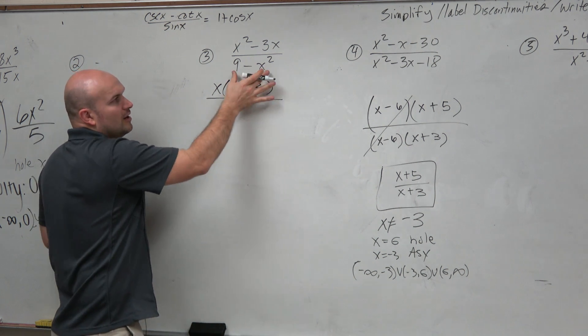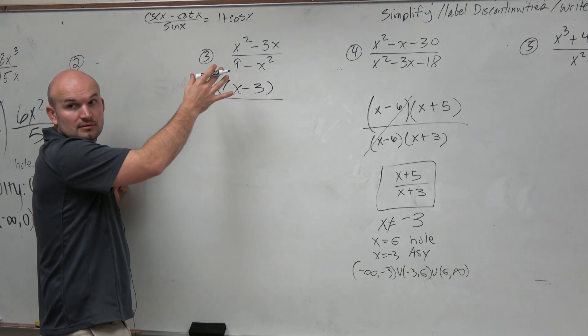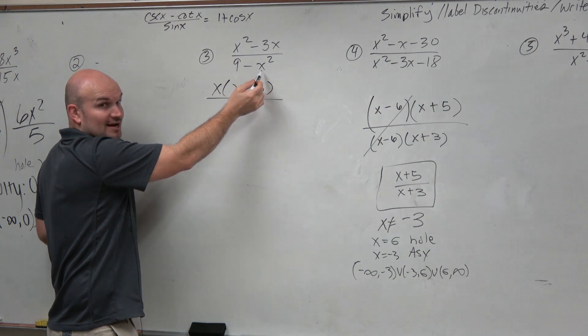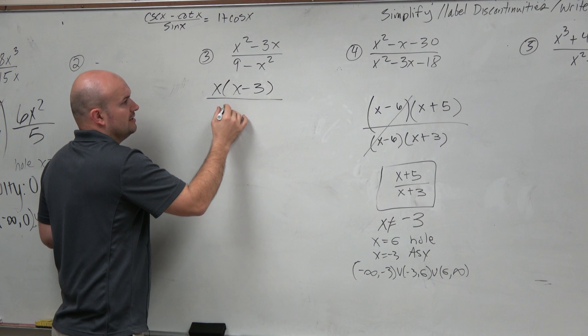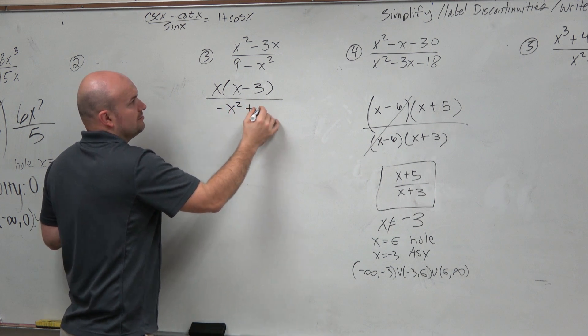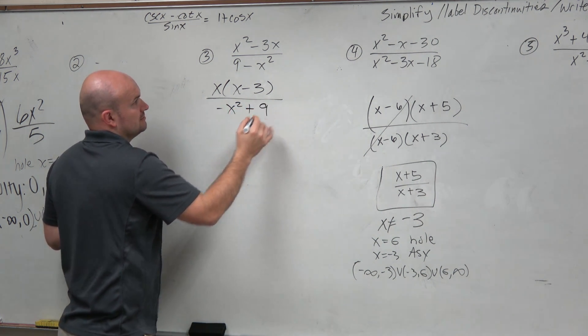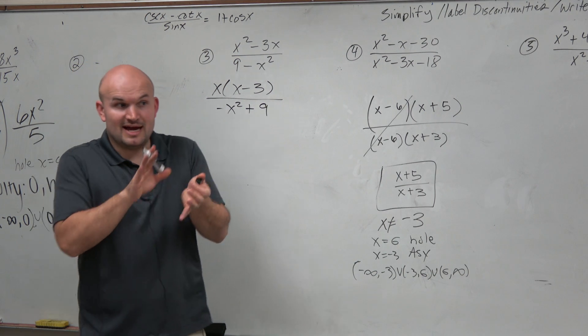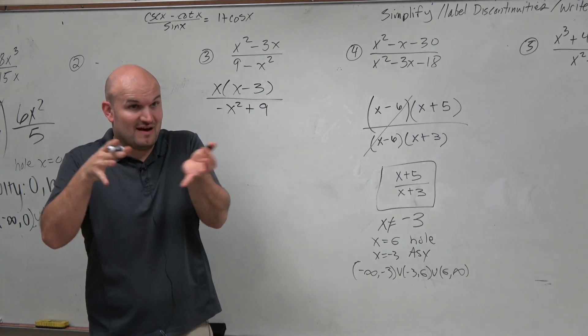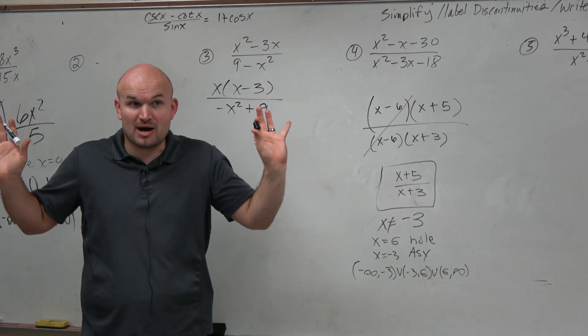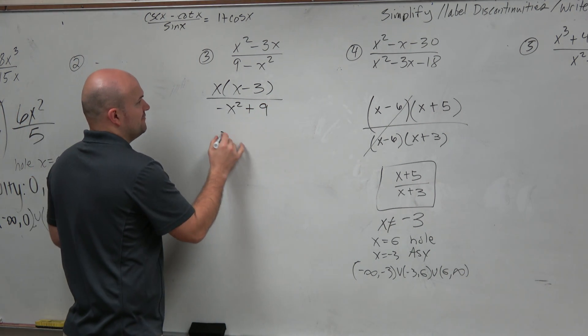So why don't we do that from the get-go? I'll rewrite this as negative x squared plus 9. And I factor out a negative. That means I'm dividing out a negative. I'm not changing the problem. I'm just dividing out a negative.